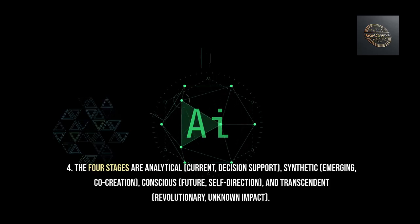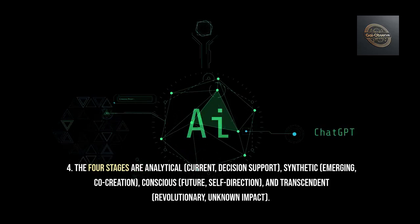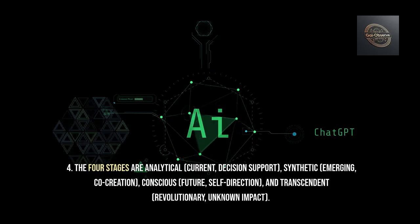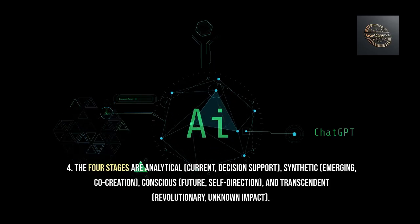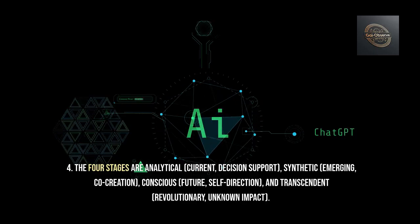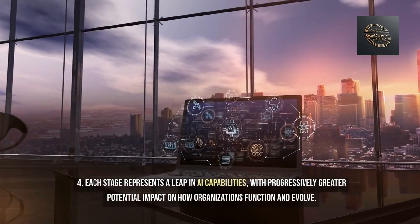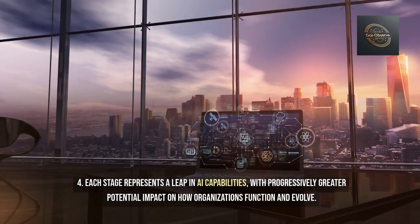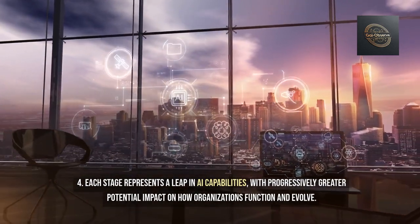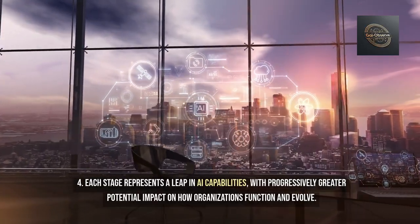Answer 4: The four stages are analytical (current decision support), synthetic (emerging co-creation), conscious (future self-direction), and transcendent (revolutionary, unknown impact). Each stage represents a leap in AI capabilities with progressively greater potential impact on how organizations function and evolve.